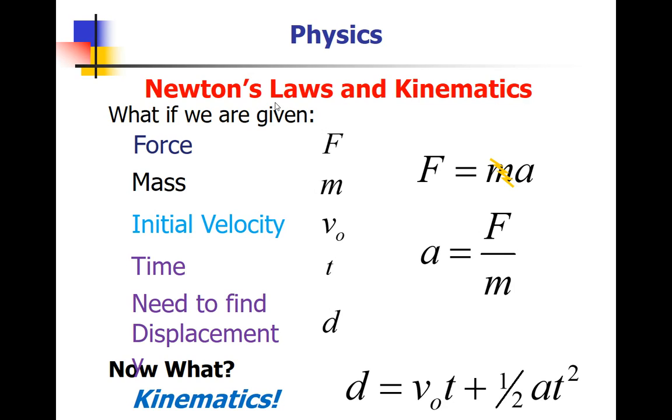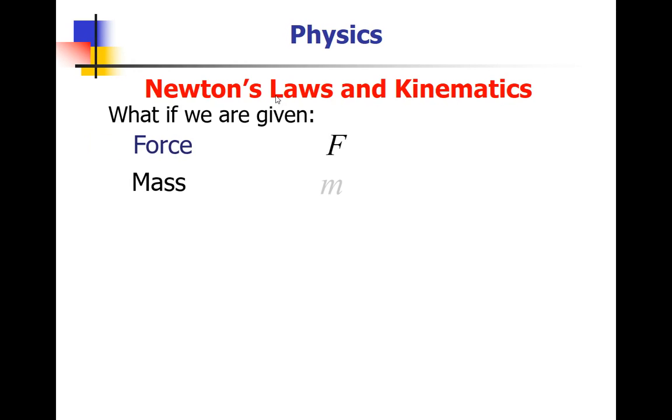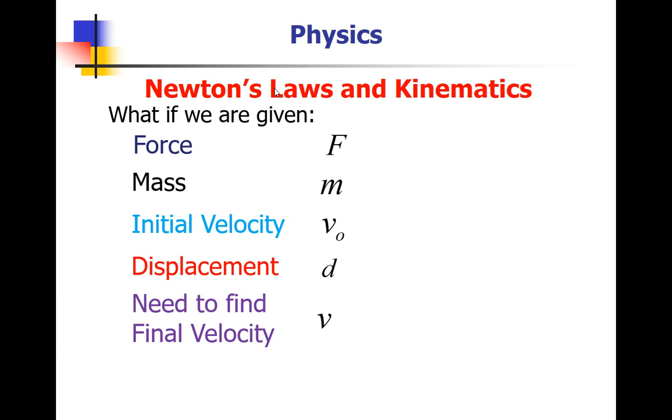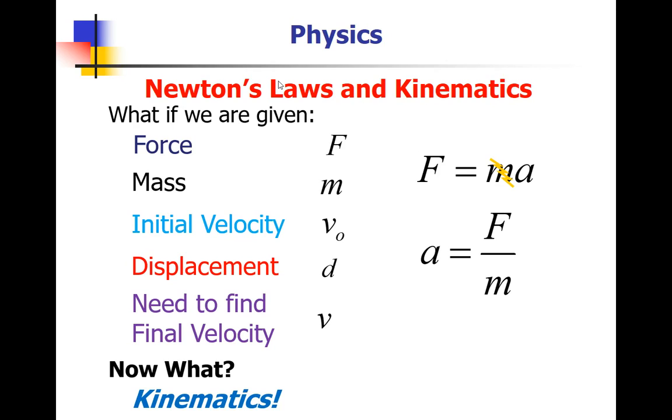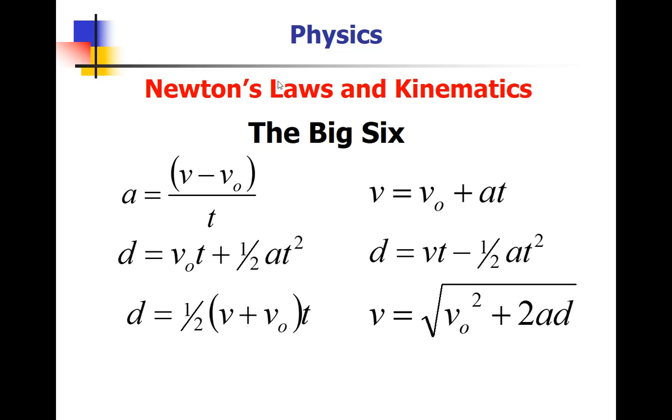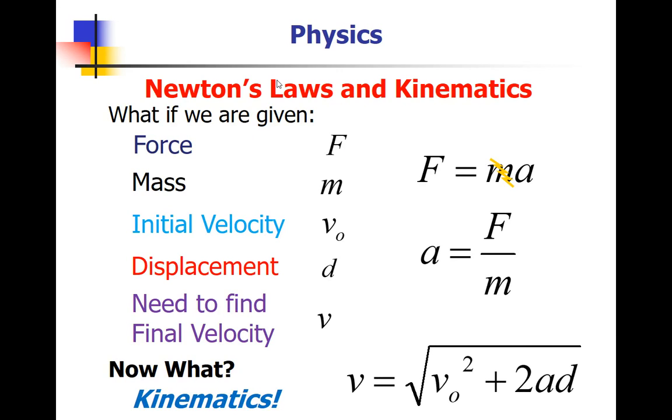How about if instead we are given the force, the mass, the initial velocity, and the displacement? No time. And told to find the final velocity. Well, again, start with Newton's second law. F is MA. And with a little easy algebra, I can determine the acceleration. And now what? The kinematics. Notice with this one, I don't have time anywhere as a given. Well, when I look at my big six equation for kinematics, only one of those does not have time as a variable. Makes this one an easy choice. The V squared equation. So with these givens and what I'm looking for, I would need, first of all, Newton's second law, then the V squared equation solved for final velocity.